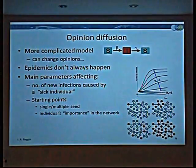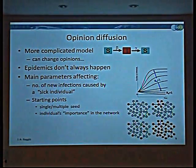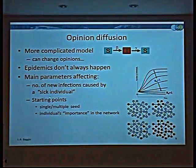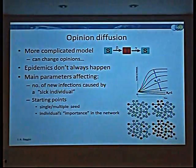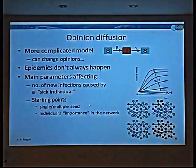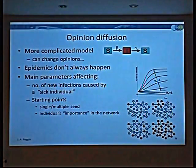That means I don't reach full infection at all times. Actually, it's very hard for me to get to that level. The main parameters affecting the starting model are the number of infections I can cause, the starting point — whether it's a single person or more than one — and the importance of that person on the network.